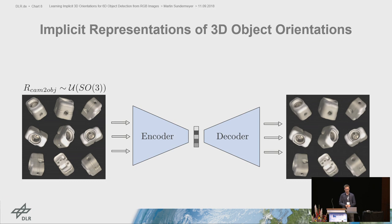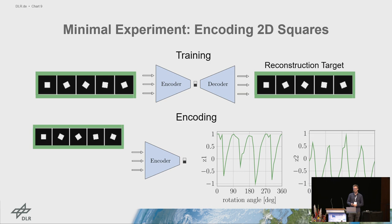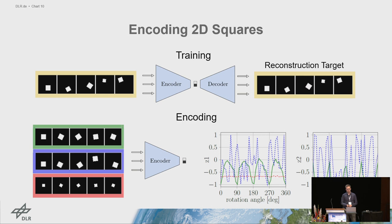For instance, we encoded binary 2D squares in a two-dimensional latent space. The goal is to find an encoding that changes continuously with the rotation of the square, while being invariant to small translation and scale differences. After training, we get an encoding with some pattern but it is not really continuous, and if we translate or scale the squares slightly, they are encoded pretty randomly — expected because we did not train with those variations. If we include random translation and scales during training, these factors are also encoded in the latent space, but we want to encode rotation exclusively.